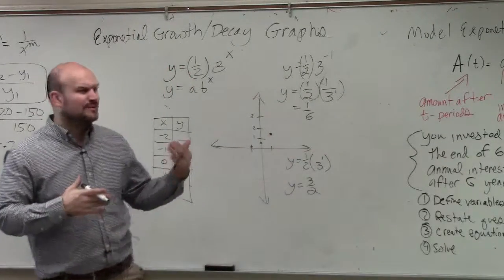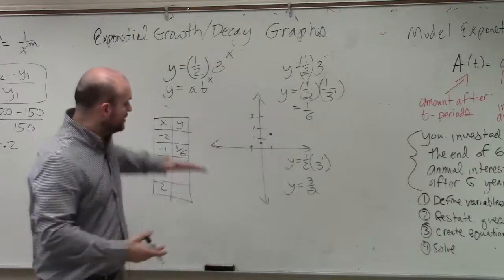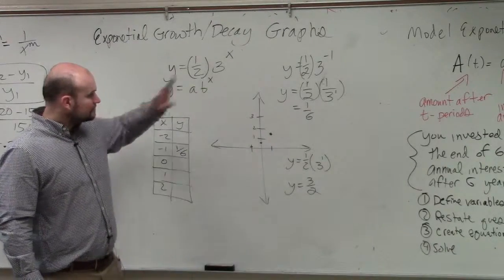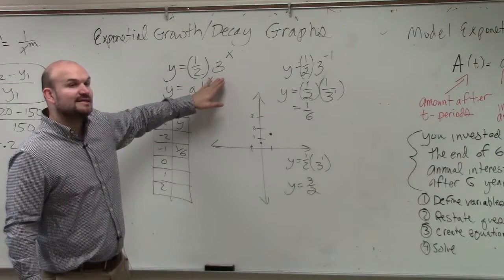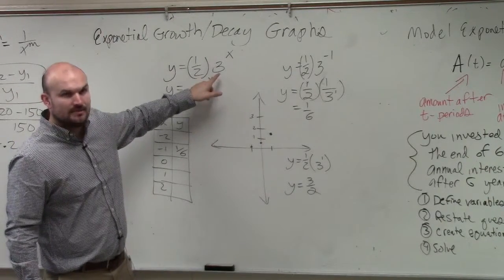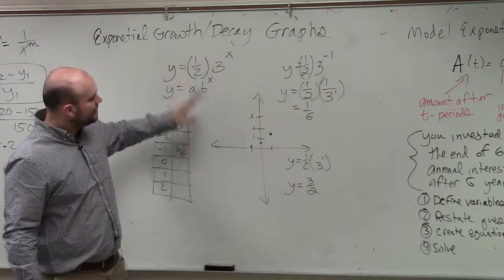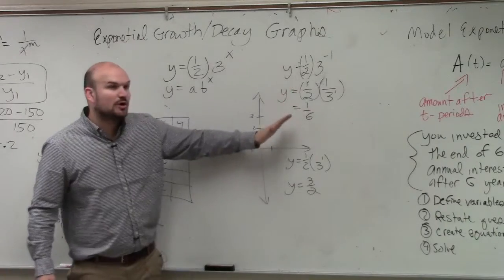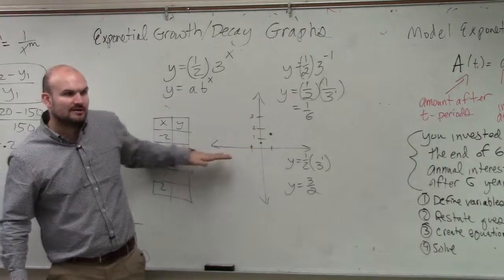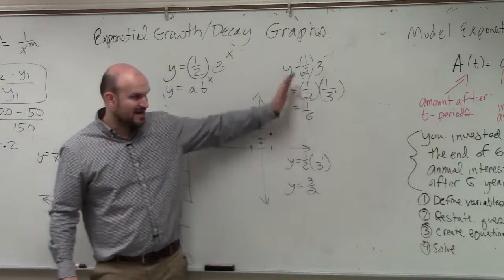Now, again, what do we know about the understanding of the behavior of this graph? We know this graph is a—well, first of all, sorry. Let's look at the value of b. We know that this graph is a growth graph, because b is greater than 1. Correct? Right? And we know that a is greater than 0. We also know this graph is going to approach an asymptote, right? And that asymptote is going to be at y equals 0.